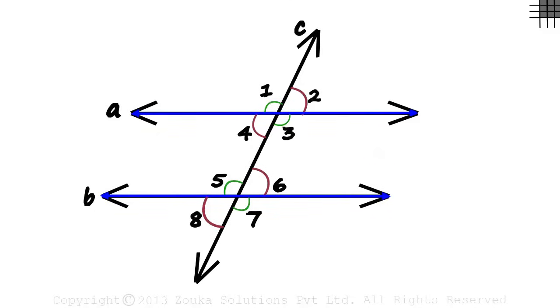So if lines A and B are parallel, we can see that angles 1, 3, 5, and 7 are equal, and angles 2, 4, 6, and 8 are equal.